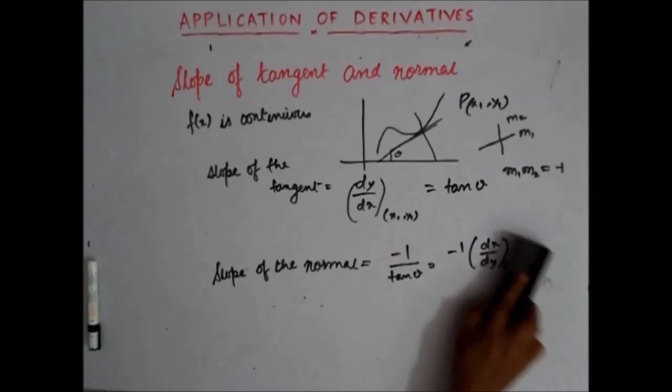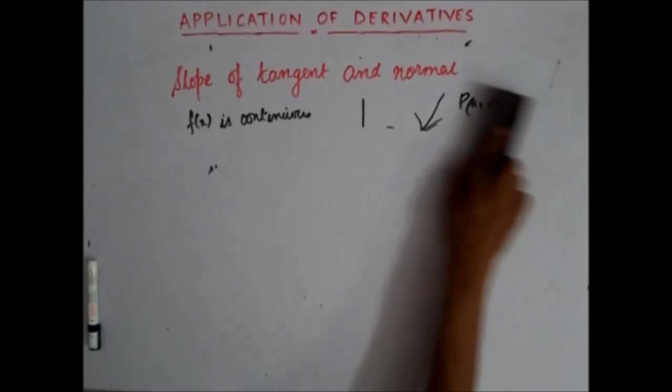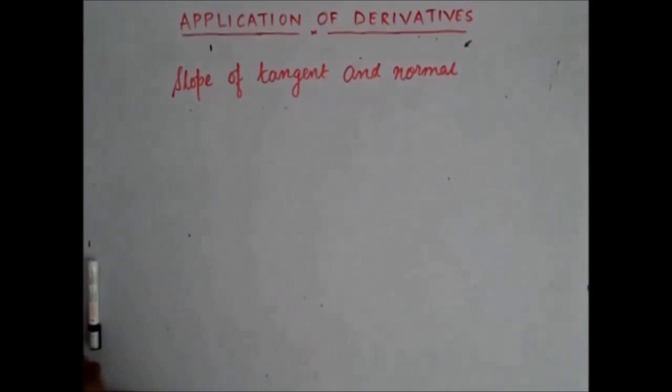Now, given that we have found out the slope of the tangent and normal, let's find out the equation of the tangent and normal.